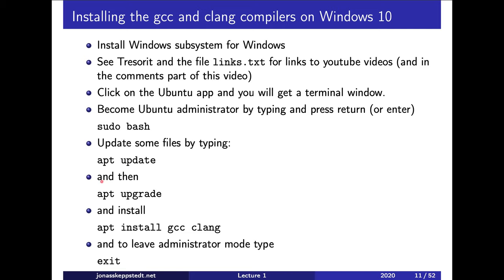What you do then is type apt update, which will fix some files for where to download updates. Then you can type apt upgrade, which will bring the Linux installation up to date. Then you can type apt install and what you want to install — two options are GCC and Clang. It's sufficient with one of them, but it's nice to try different compilers.